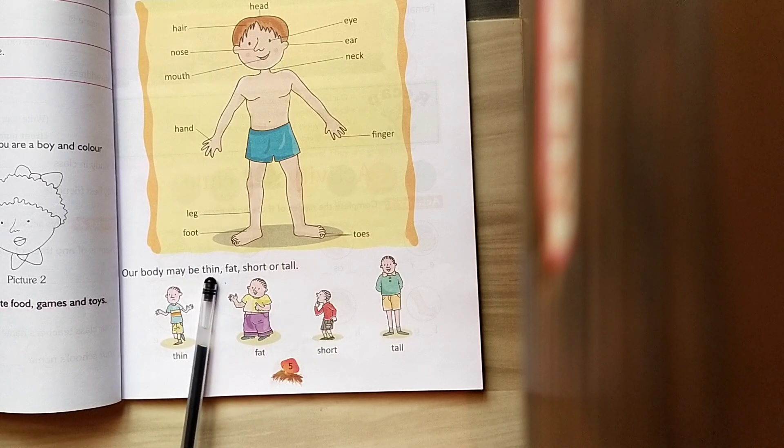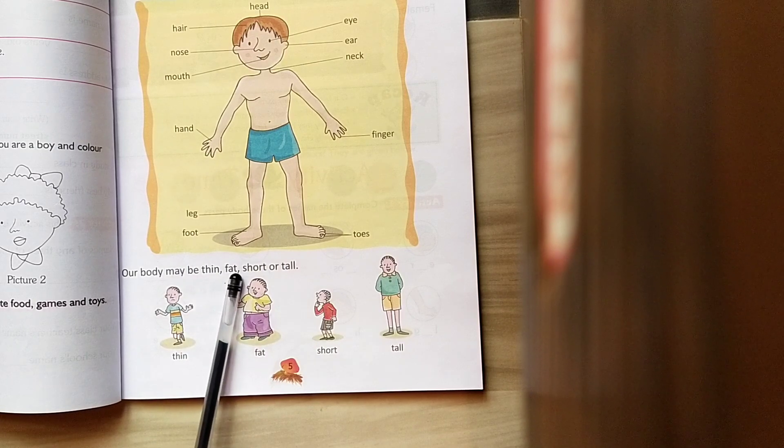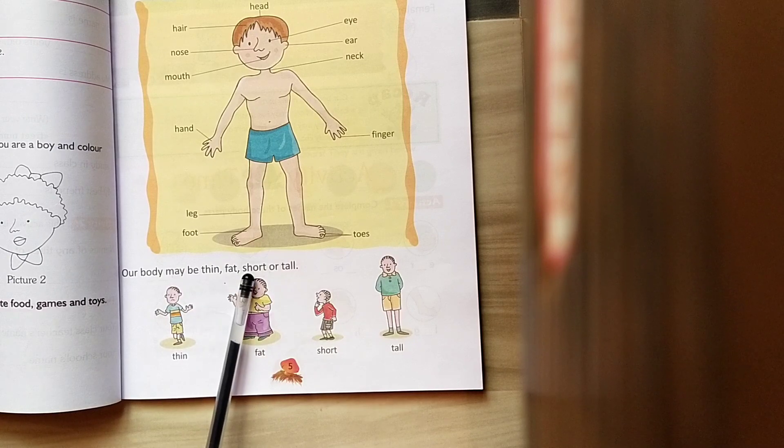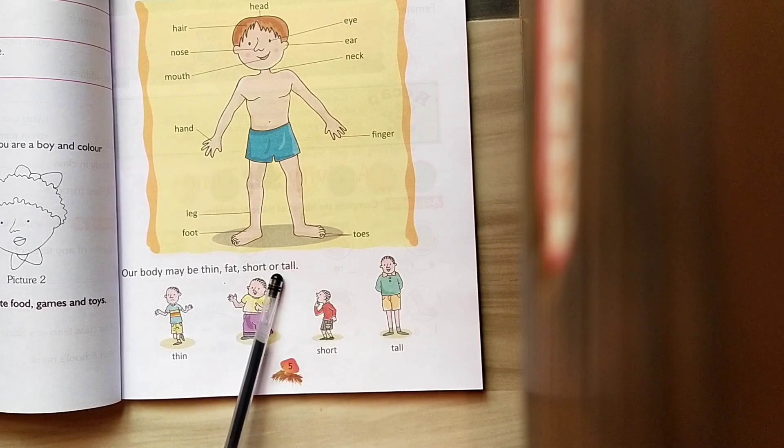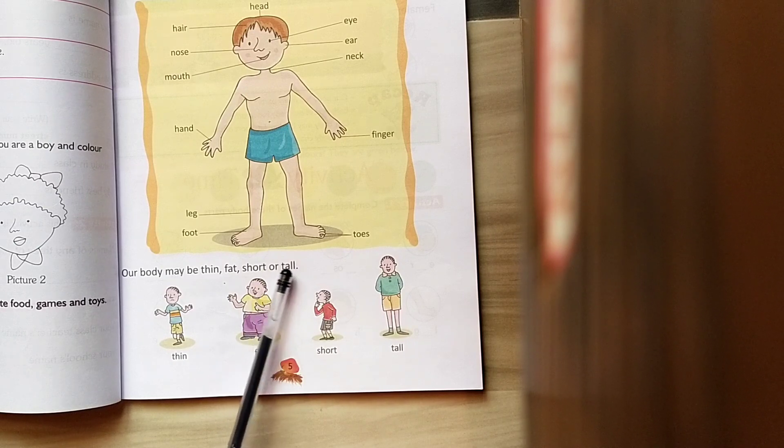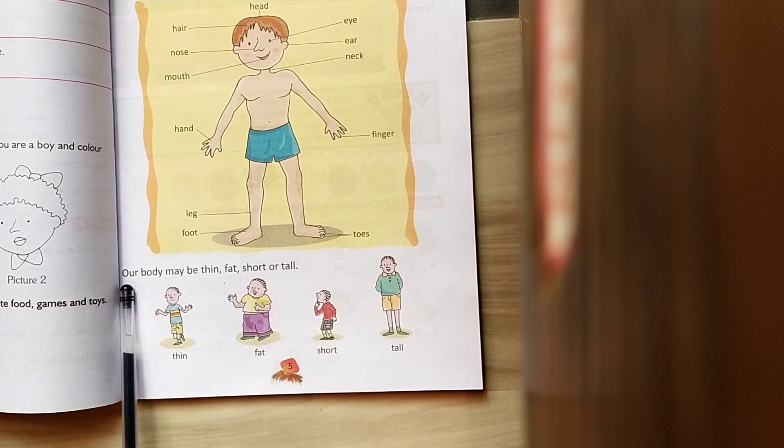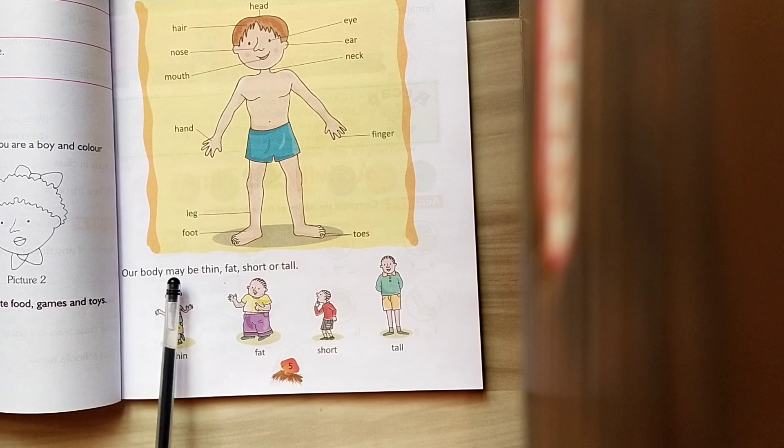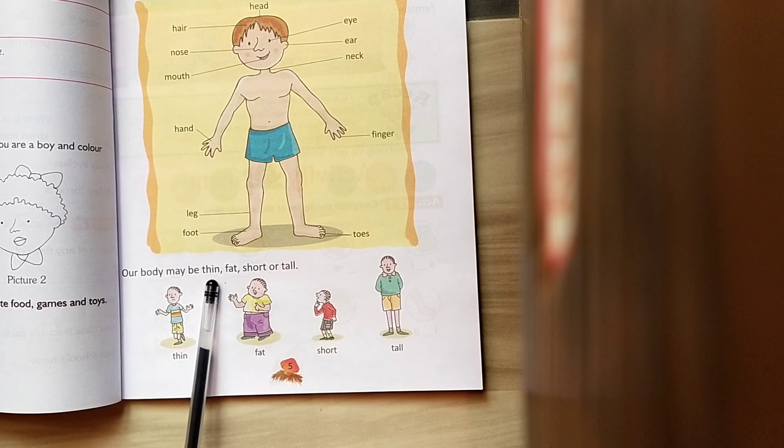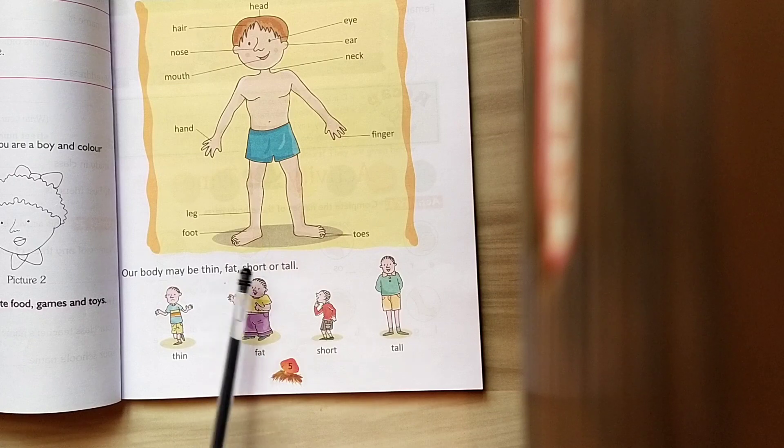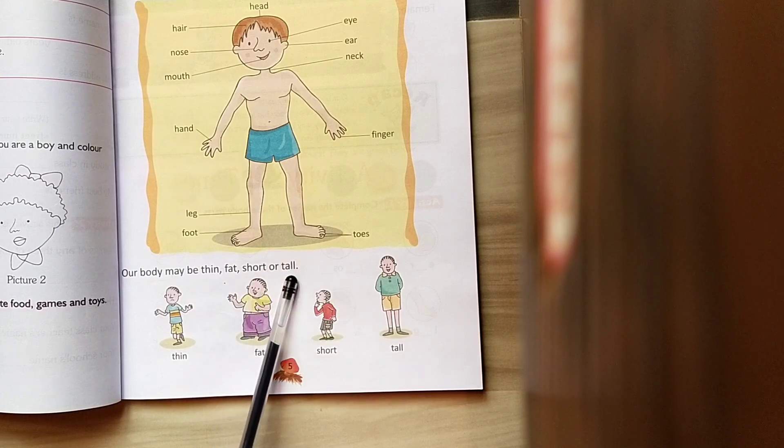Thin, Fat, S-H-O-R-T, Short, O-R, or, T-A-L-L, Tall. Our body may be thin, fat, short or tall.